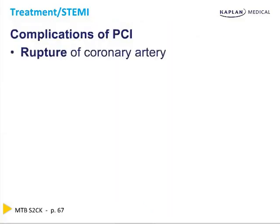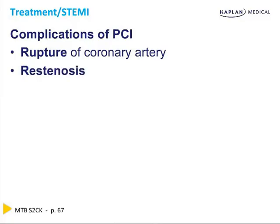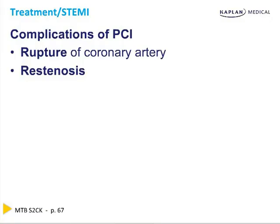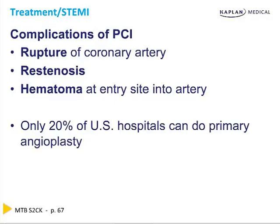A complication of angioplasty or PCI is that it can rupture the coronary artery, so almost all places have cardiac surgery backup. However, primary angioplasty can be done where you transfer someone for coronary surgery if rupture occurs — that's perfectly acceptable. The biggest problem is re-stenosis, which is why you use a coated stent and dual antiplatelet therapy. Heparin and platelet drugs can cause hematomas at the site of arterial entry.